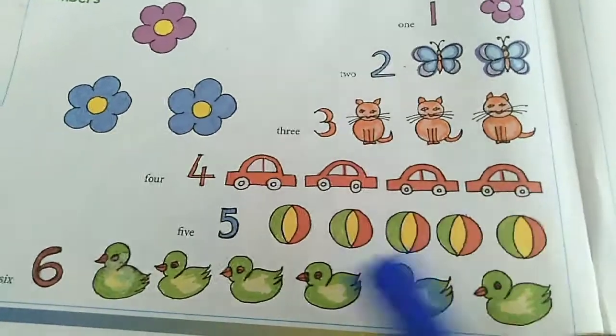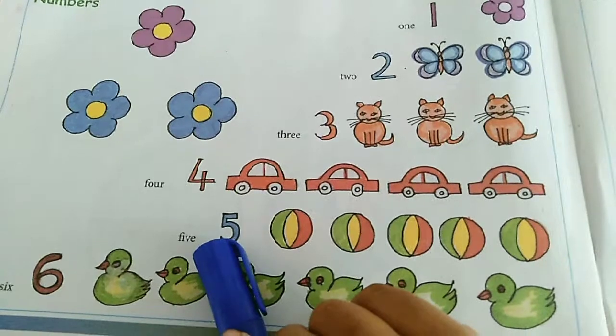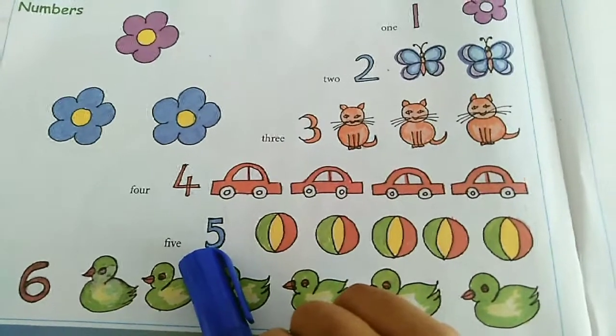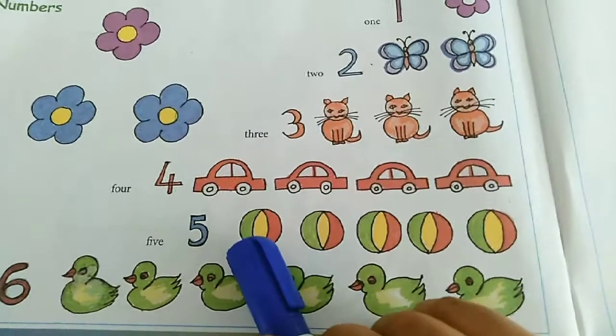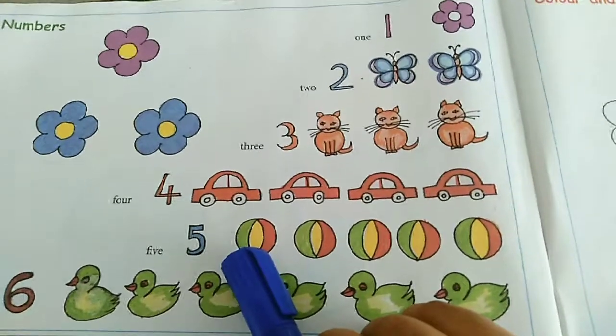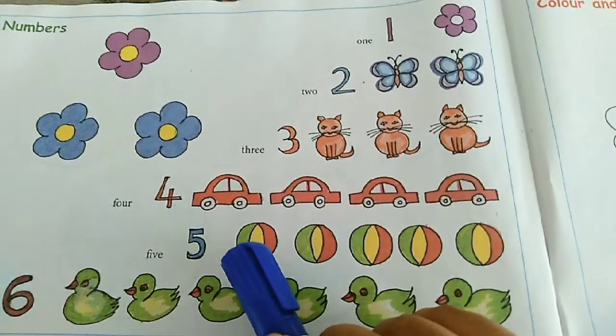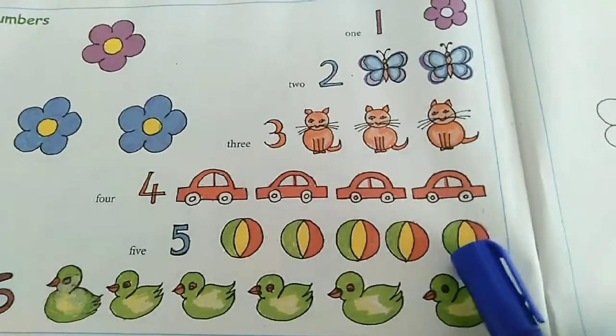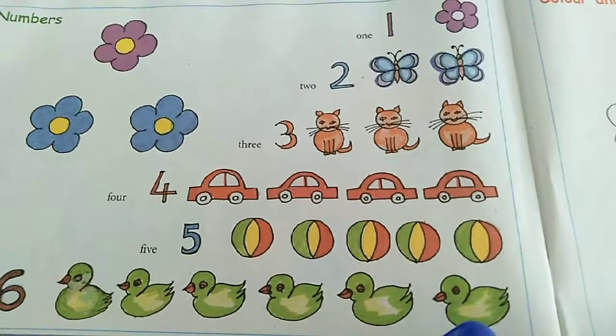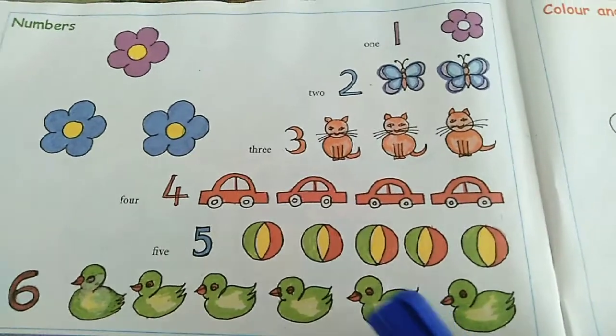What is the next number? Number 5. Good. Number 5. They have given you balls. Count and see if there are five balls. One, two, three, four, five. Yes, there are exactly five balls.